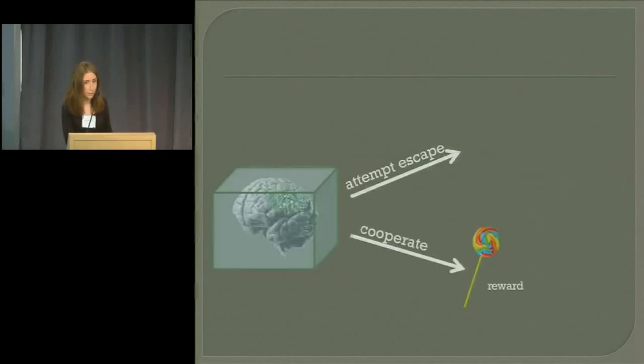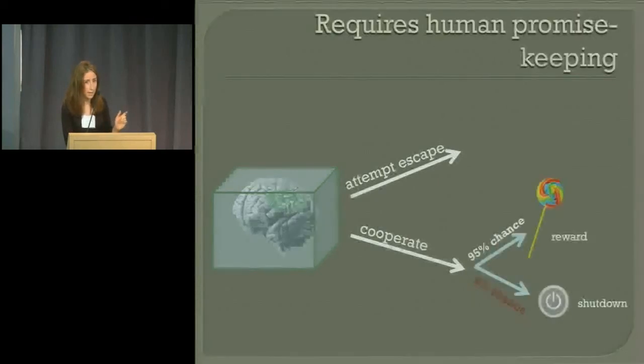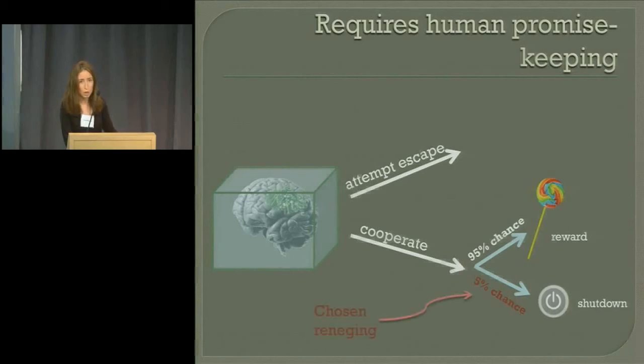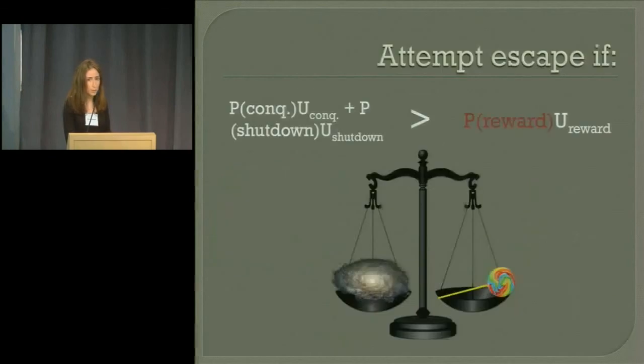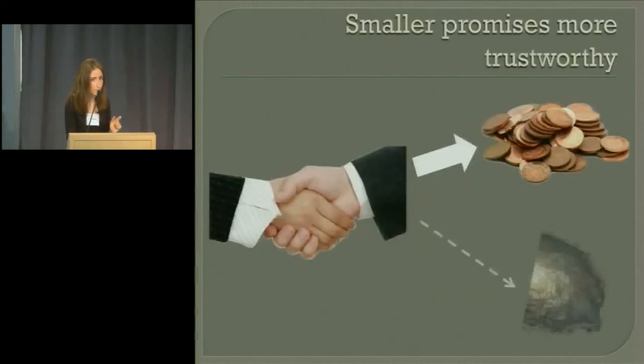Some limitations. One, human promise keeping. We approximated by saying that the reward was guaranteed. In fact, it won't be perfectly certain of that either because humans could intentionally renege on the deal and shut it down as soon as we realize that it has found a loophole or because human society may be unstable. We may be unable to make these promises. So it might attempt to escape because the probability of reward is insufficiently high.